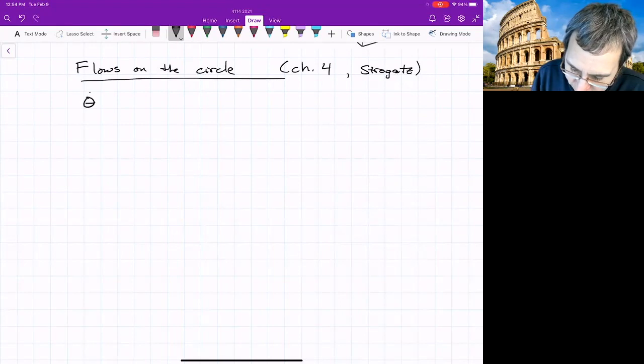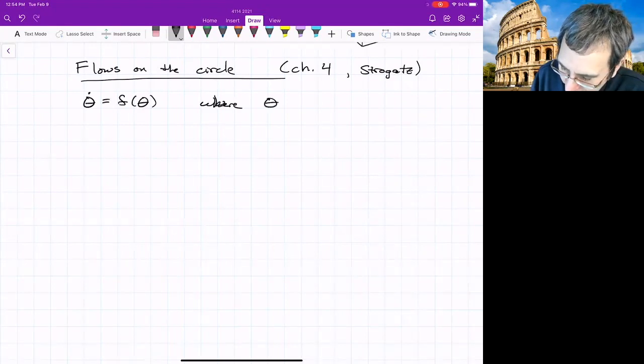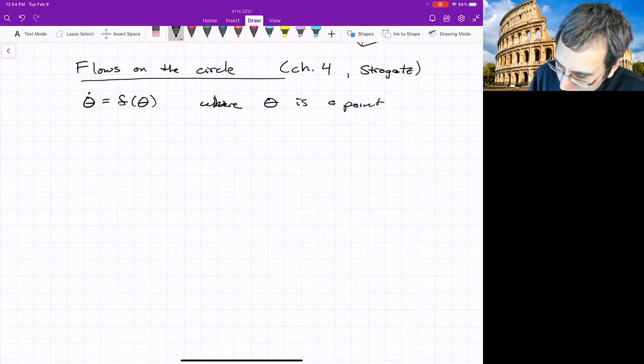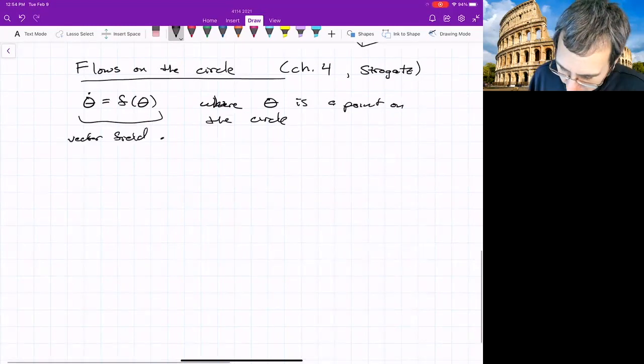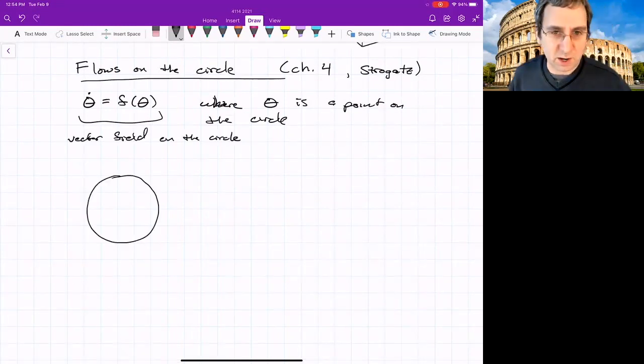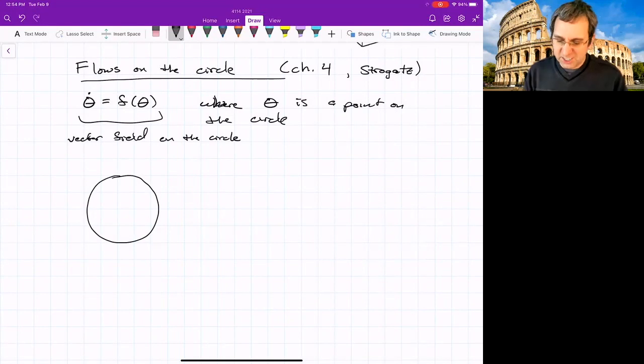What we're considering now is theta dot equals f of theta, where theta is a point on the circle. So this differential equation defines a vector field on the circle. Just sort of plot the circle. We're not thinking if there's an inside and outside. Everything, all the action happens on the circle.